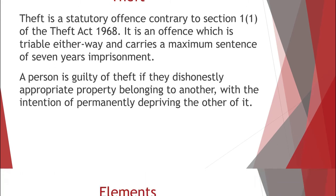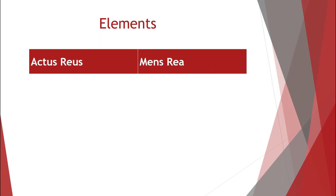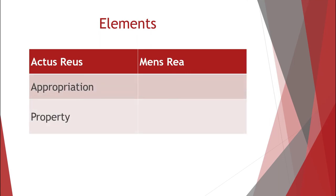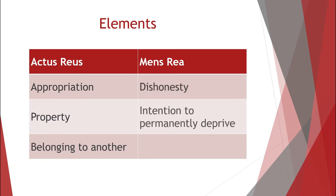There are five elements to the offence of theft. Appropriation, property, and belonging to another make up the Actus Reus, and dishonesty and intention to permanently deprive make up the Mens Rea.